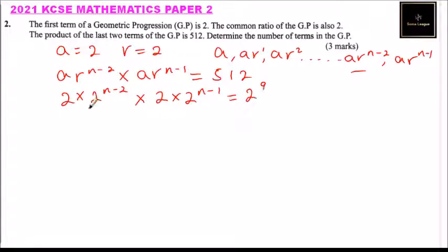We can combine this. Of course here we have 2 to power 1, although you don't put it. So we can combine all this and say this is 2^(1 + n - 2 + 1 + n - 1) using the first law of indices. This equals 2 to power 9.